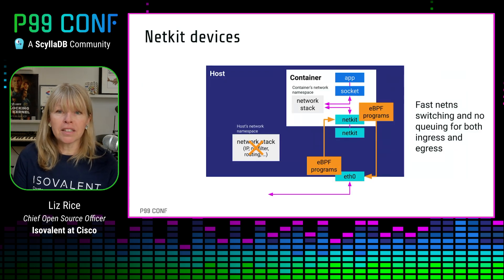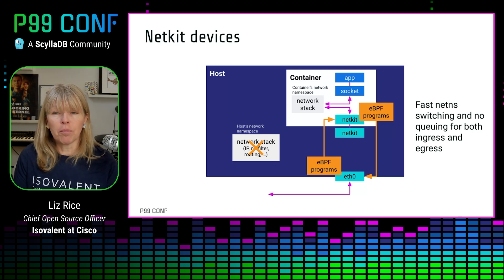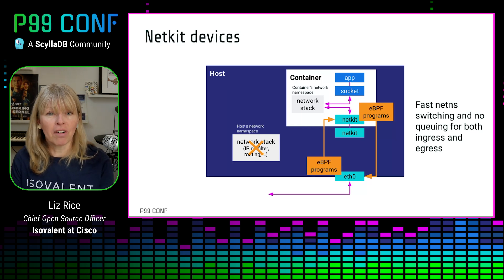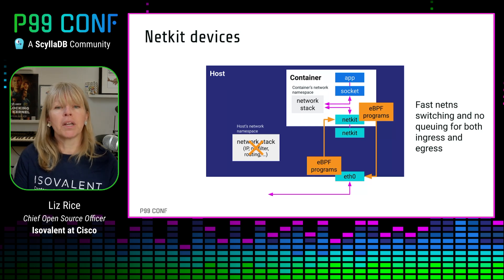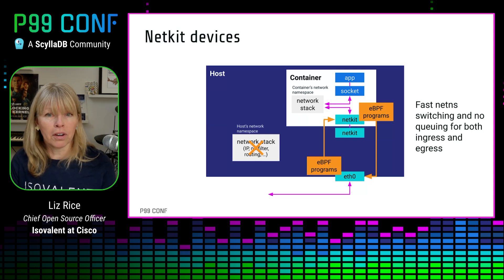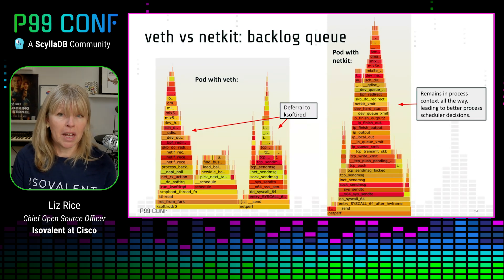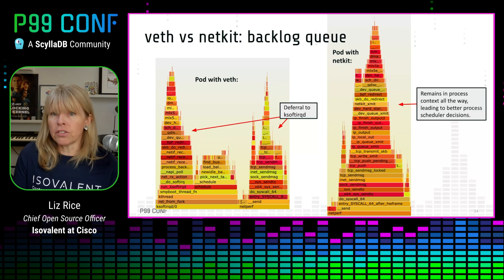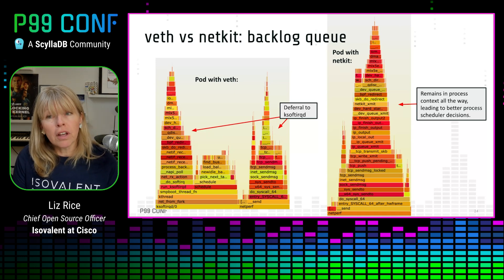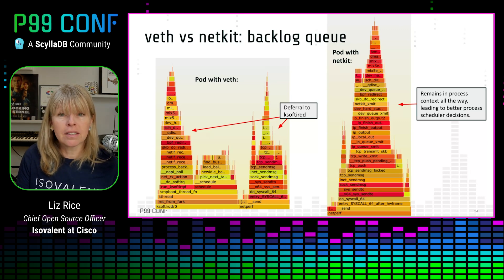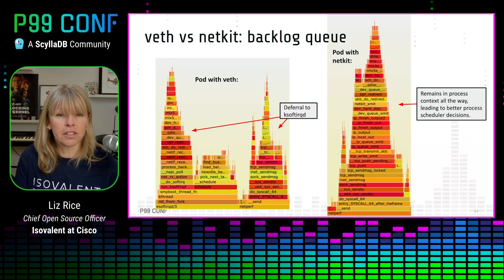So by replacing those virtual Ethernet devices with NetKit devices, we can redirect packets in both the ingress and egress directions, switching them into the correct network namespace immediately. So we can skip that backlog queue in both directions. And if we compare the flame graph with NetKit, the packet gets redirected in the context of the application thread. This uses less CPU, but it also helps the kernel's process scheduler make better decisions because it's better able to account for the time required by the application to send packets.